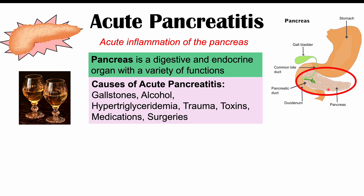There are many causes of acute pancreatitis. Some of the more common ones include gallstones, alcohol consumption — especially long-term heavy alcohol consumption of at least five years — hypertriglyceridemia or high triglyceride levels, trauma, toxins, medications, and surgeries like ERCP.